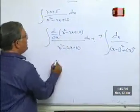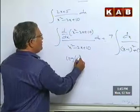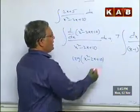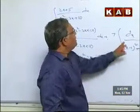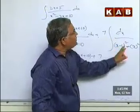So this is f dash x by fx model. What is the answer? Log x square minus 2x plus 10 plus 7 by. What is the answer here? x square plus a square.